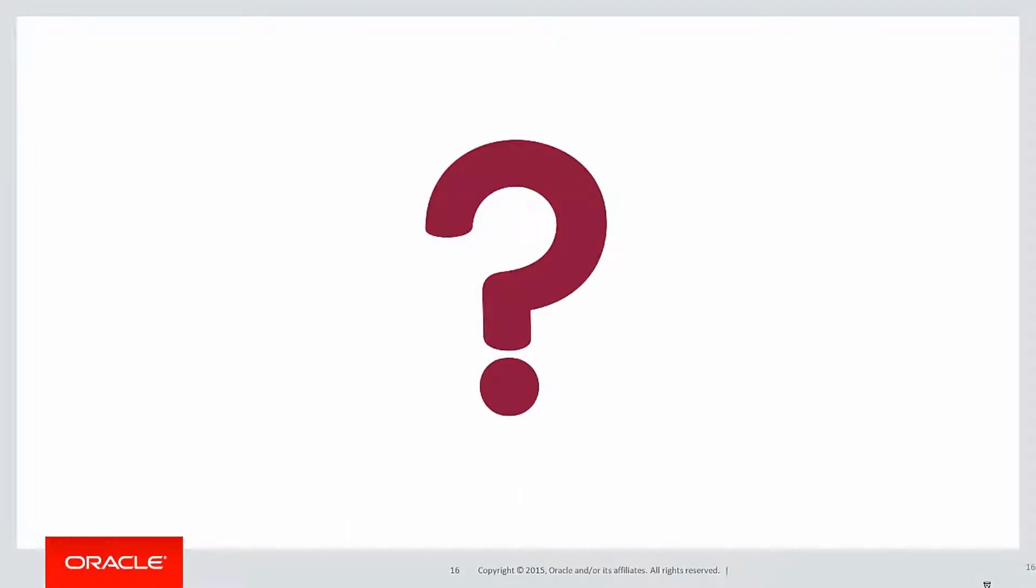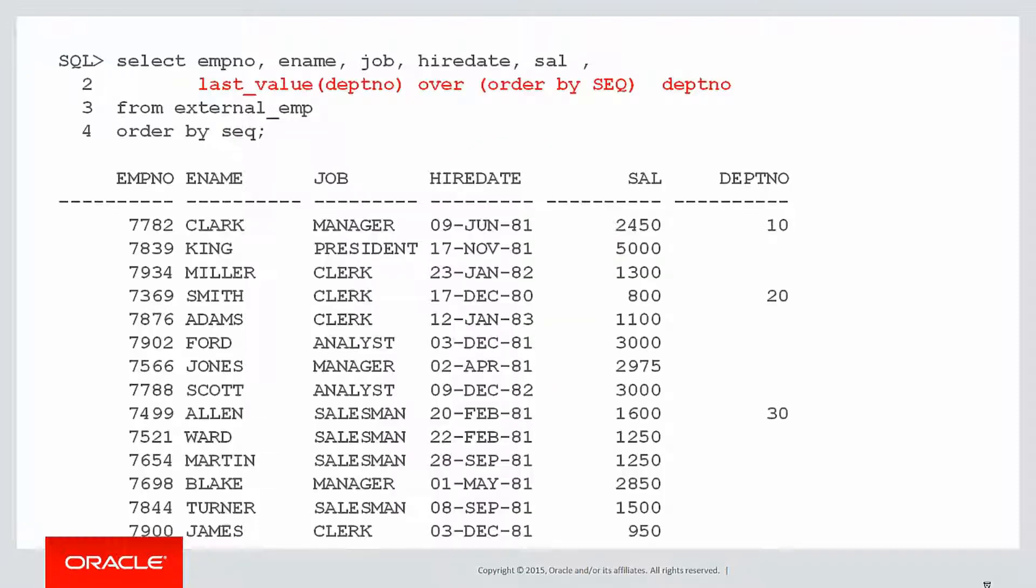Well, last_value actually did its job as it's meant to. If we look at that far right column again, obviously the hidden text there is the fact that all those values are null. Last_value respects that.